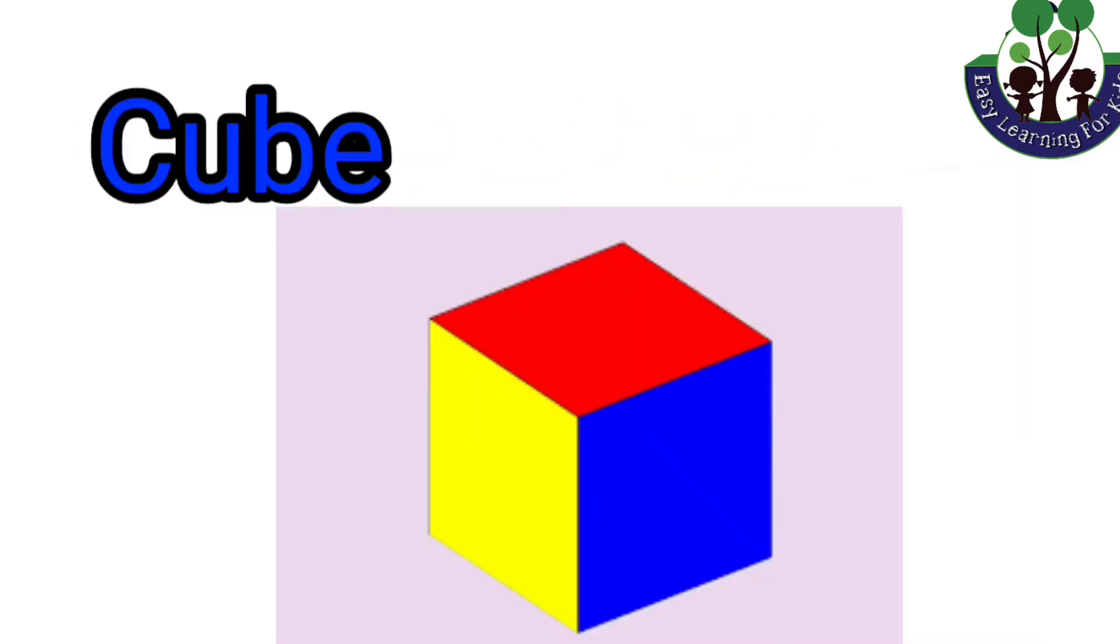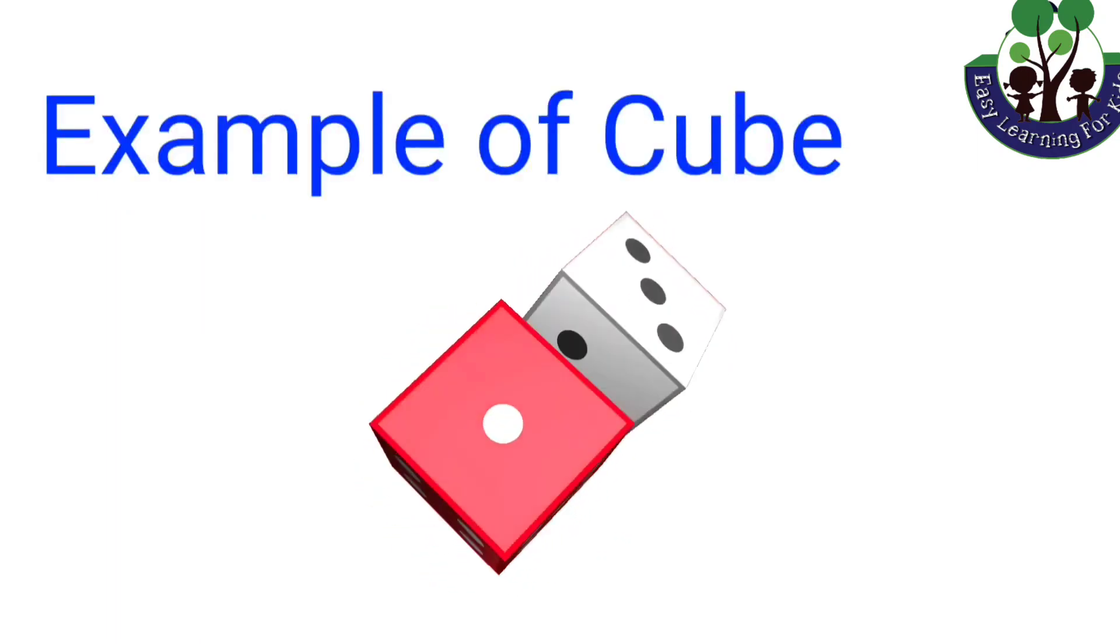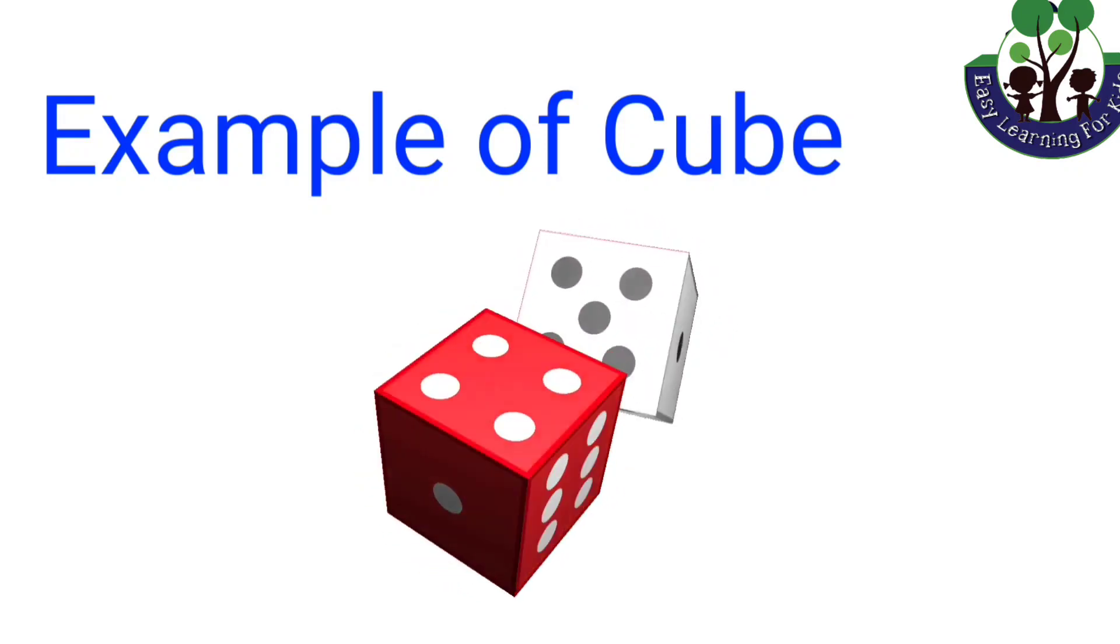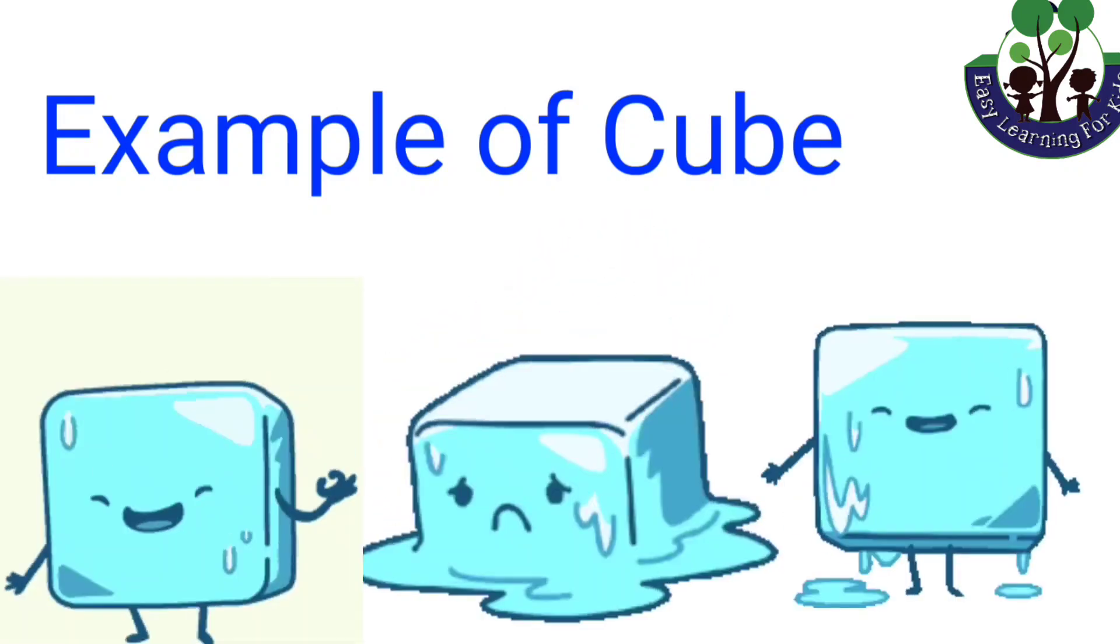Cube. A cube is a closed three-dimensional geometric shape. It is made up of six squares. It has six faces. For example, ludo dice and ice cube.